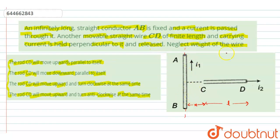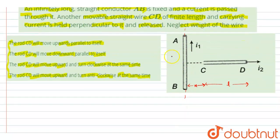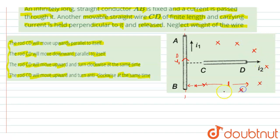There is a current I1 flowing in the wire AB. Due to this current I1, there will be a magnetic field produced. By the right-hand screw rule, we can find that the direction of the magnetic field generated by I1 would be in the dot polarity — that is, out of the page or out of the screen.